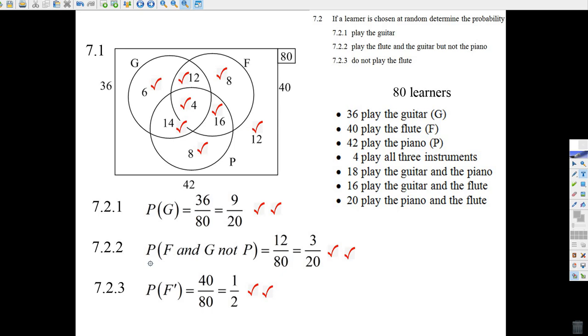But what about the probability of playing the flute and the guitar but not the piano? Well, the flute and guitar right here, there's the flute and guitar but not the piano. It must be that 12 out of 80, which is 3 out of 20.